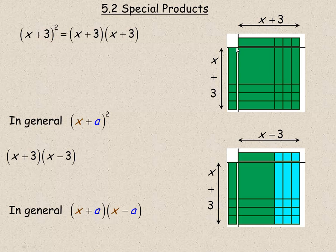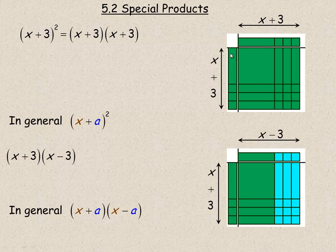Algebra tiles are actually an area model. This long skinny rectangle here represents a rectangle that is x units long. So this does not have a specific length — the length is x, so x could be some number. It's x long but exactly one unit wide. If you take a rectangle and multiply the length by the width, x times 1 is 1x, so this has an area of 1x, or we call it an x. Each of these little tiny squares is meant to be a 1 unit by 1 unit square, so 1 times 1 is 1 — they have an area of 1 each.